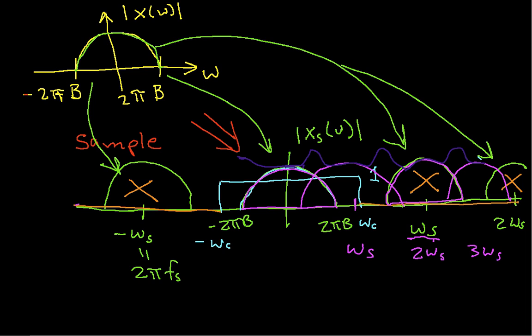So when I try to reconstruct my signal, my original x of omega gets corrupted by all this stuff that's been added in. And I have another chunk out here. So this process of corrupting the signal is called aliasing, and aliasing is obviously bad.